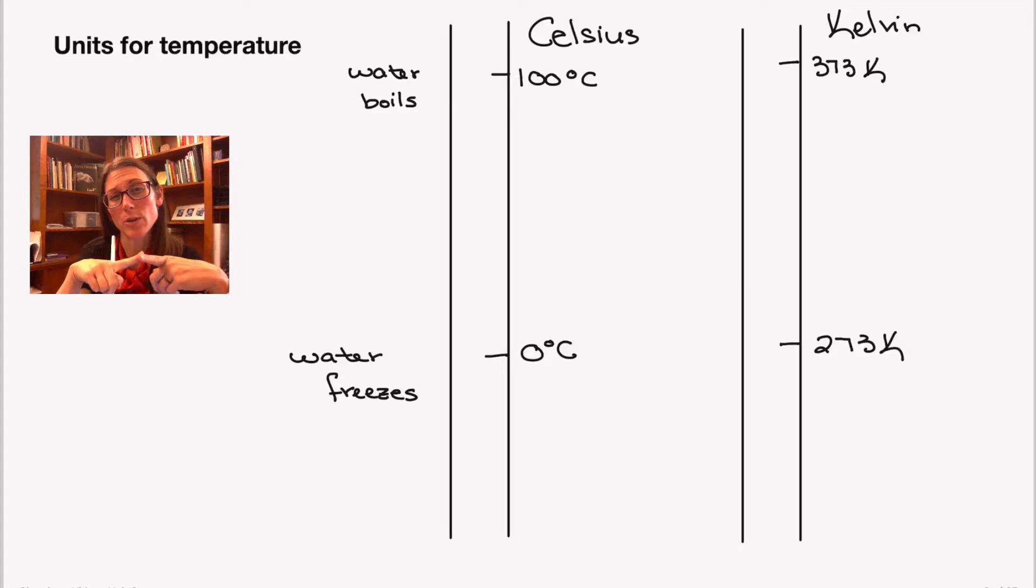Two things I want you to notice. First, there's no degree sign in front of the K for the unit Kelvin. So we just say 273 Kelvin, not degrees Kelvin, just Kelvin. Secondly, there is a difference of 100 between where water freezes and water boils. And so the size of a degree in Celsius and a degree in Kelvin is the same.